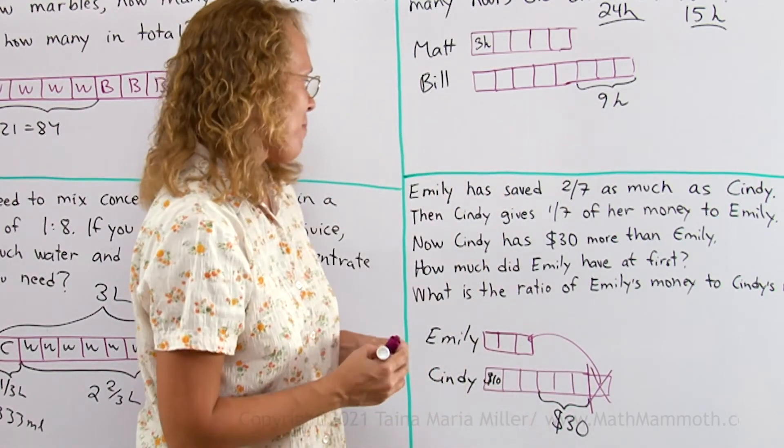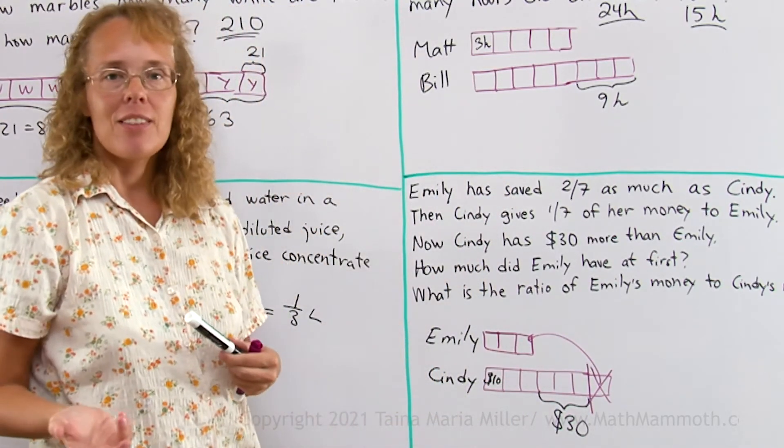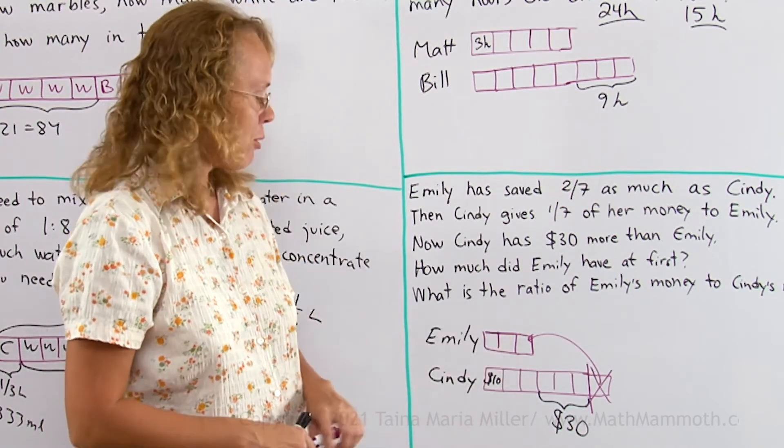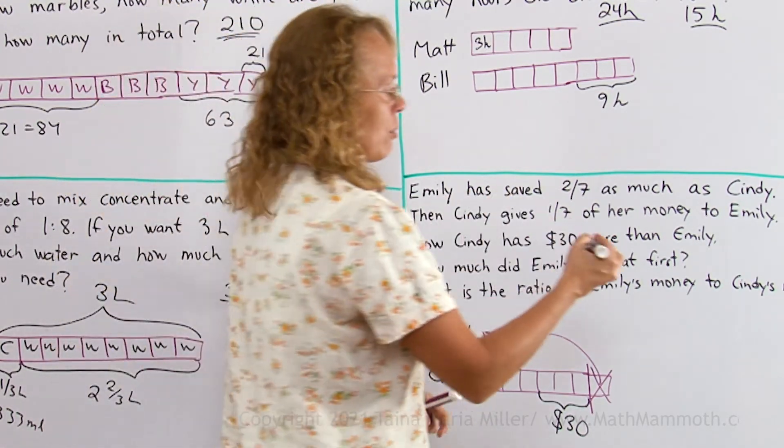Can't get much easier than that. So how much did Emily have at first? At first Emily had these 2 blocks, right? Each one being 10 dollars, so Emily had 20.